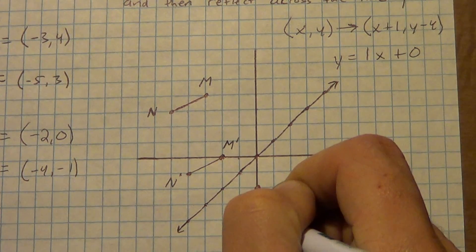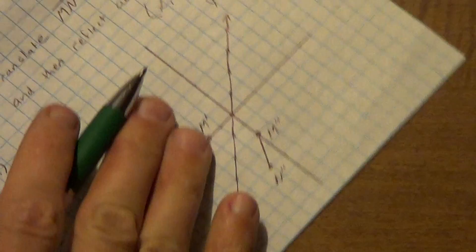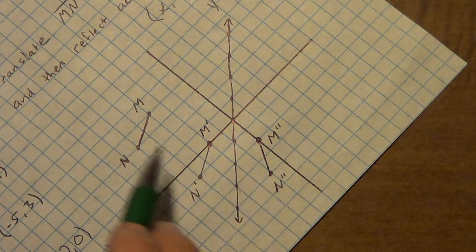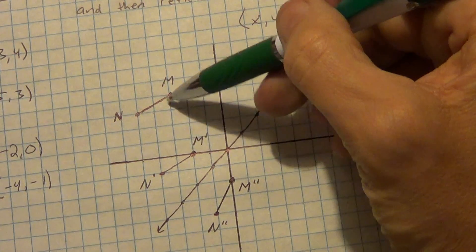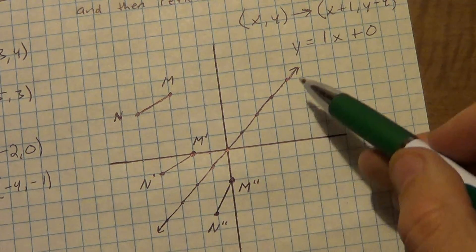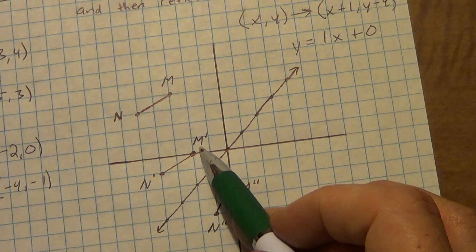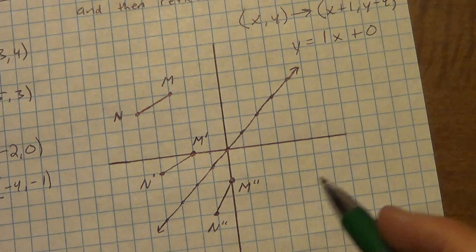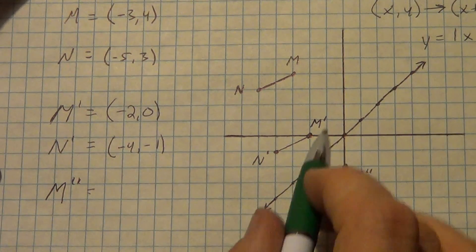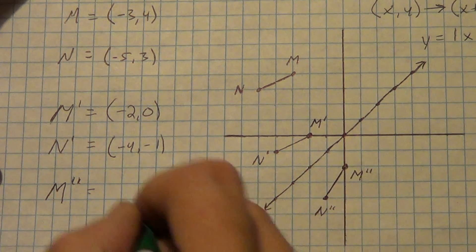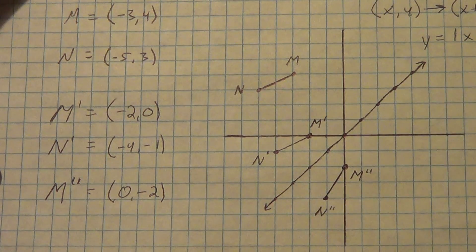Connect it — it should look like the same length. If you turn it so the line is more vertical, you can see we just took this segment and flipped it over. This was the slide and that's the flip. Is this a glide reflection? My translation vector moves in one direction and my line of reflection goes another way — they're not parallel, so this is not a glide reflection. M double prime is at (0, negative 2) and N double prime is at (negative 1, negative 4).